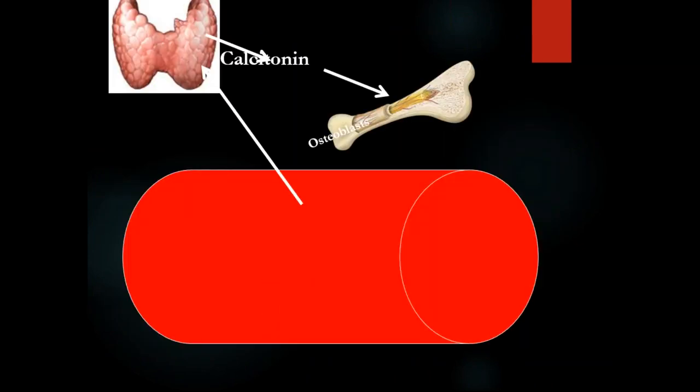Remember PTH and calcitonin. They are regulated by calcium levels in the blood. If calcium is low in the blood, PTH is activated. PTH stimulates osteoclasts, which take calcium from bones and elevate calcium in the blood back to normal levels of 8.5 to 10 milligrams per deciliter. Calcitonin works the opposite way.